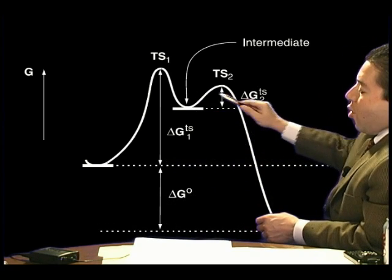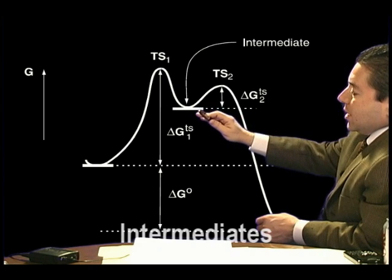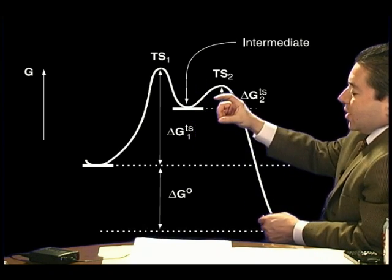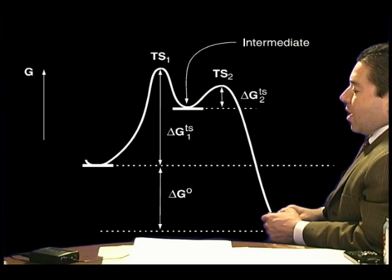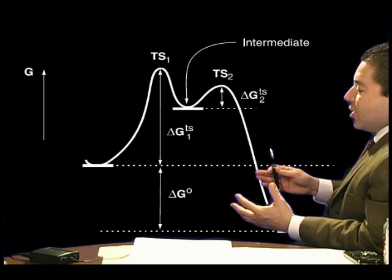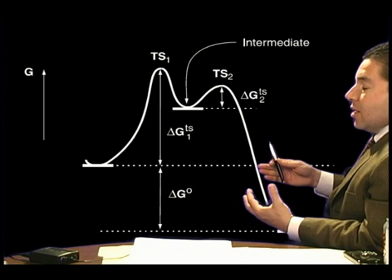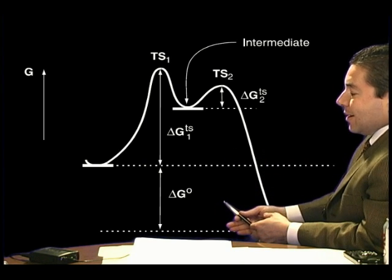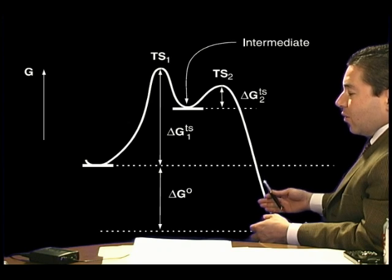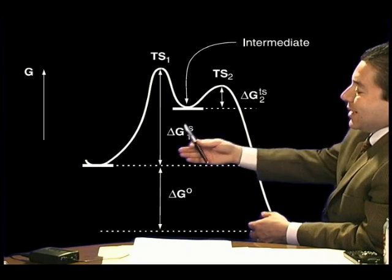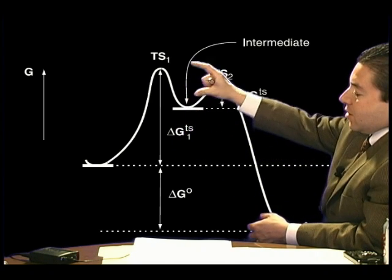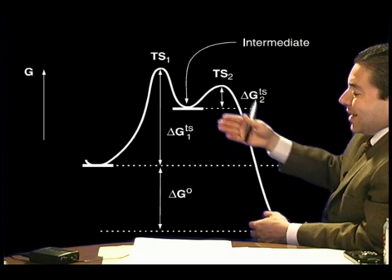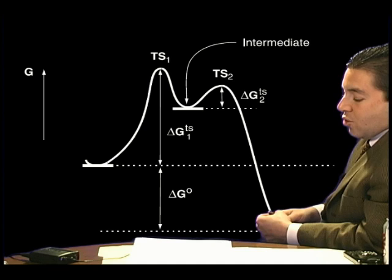Reaction energy profiles can also demonstrate intermediates, and in this case, this is an intermediate here, and hence we have two transition states. This reaction energy profile can depict both the thermodynamics, in this case an exergonic or spontaneous reaction, and kinetics of a reaction. It's a pretty large delta G transition state, and hence a relatively slow reaction.